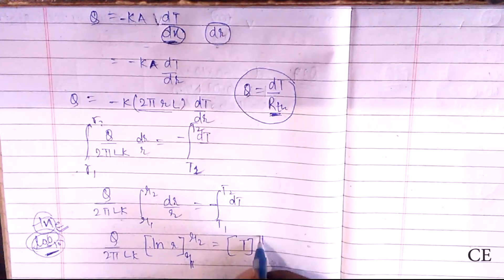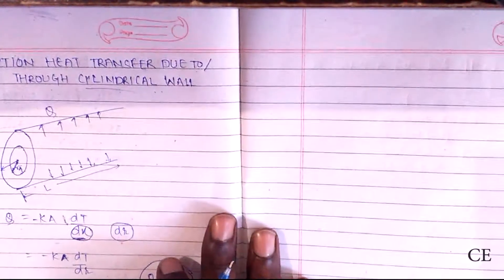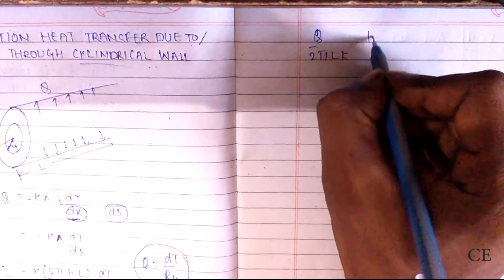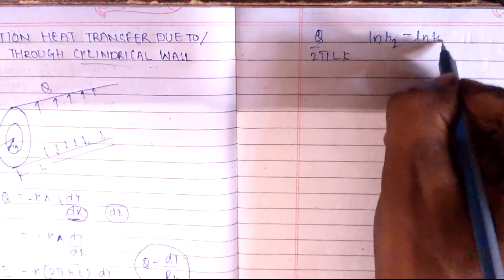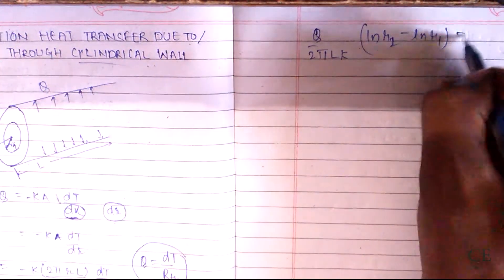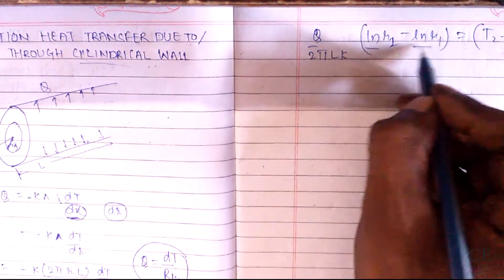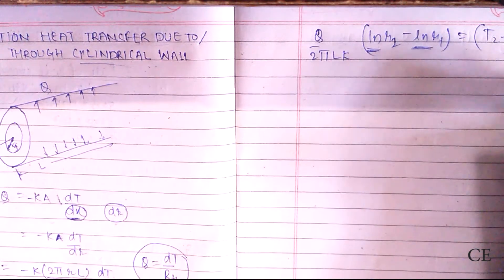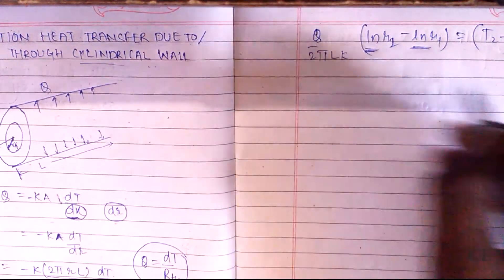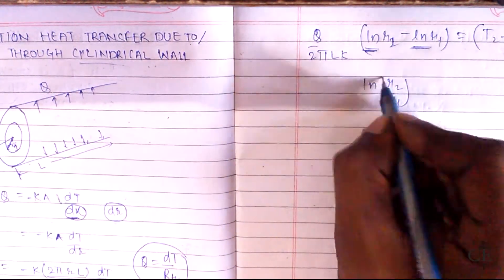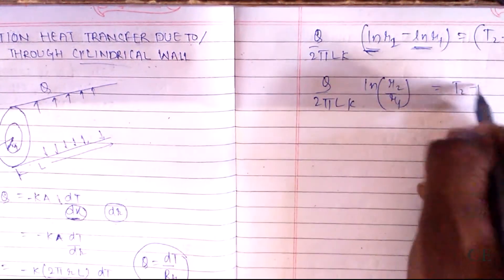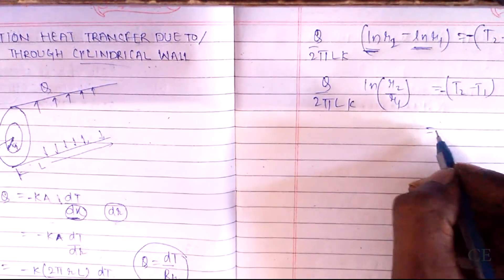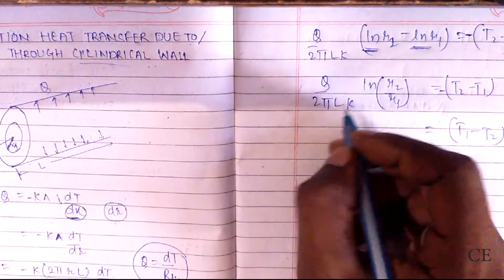Applying the limits: Q/(2πLK) times [ln R2 minus ln R1] equals T2 minus T1. Using the logarithm property log A minus log B equals log(A/B), this becomes Q/(2πLK) times ln(R2/R1) equals T2 minus T1. Rearranging signs: ln(R2/R1) times Q/(2πLK) equals T1 minus T2.